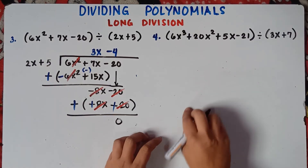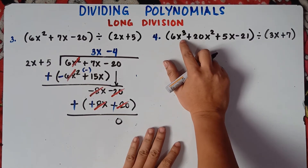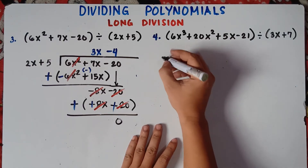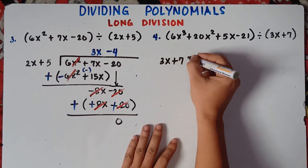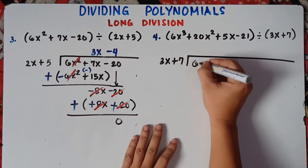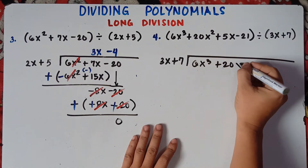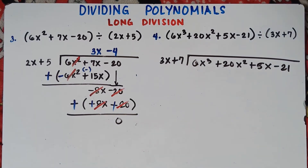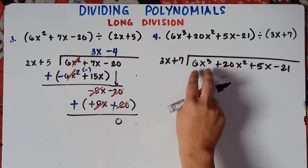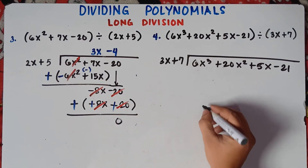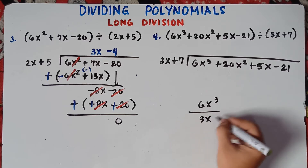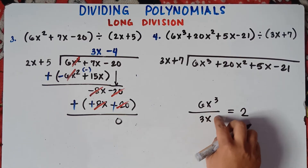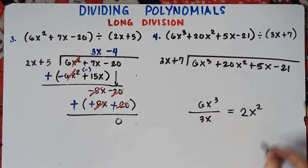Let's try number 4, class. Check first if it's arranged: we have x cubed, x squared, x, and the constant — yes, it's already arranged. So let's divide: 3x plus 7 dividing 6x cubed plus 20x squared plus 5x minus 21. Divide the leading term by the first term: 6x cubed divided by 3x. 6 divided by 3 is 2, and x cubed divided by x — subtract the exponent, 3 minus 1 — gives x squared. So the result is 2x squared.